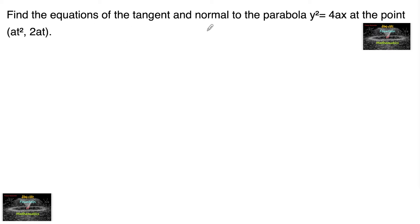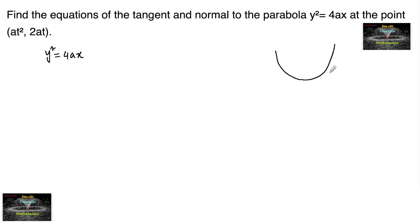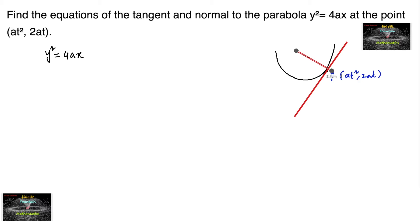Find the equations of the tangent and normal to the parabola y² = 4ax at the point (at², 2at). Here is the parabola. Let me consider the point P at (at², 2at). A tangent can be drawn, and the normal is perpendicular to the tangent.